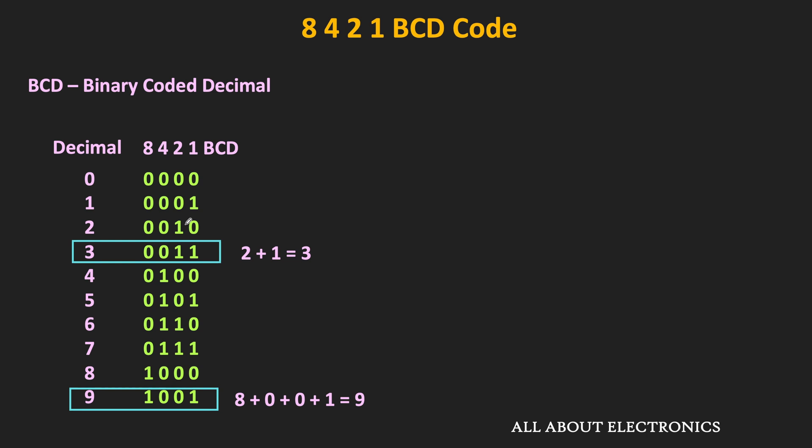So now let's see how to convert any decimal number into the equivalent BCD code. Let's say we want to convert this decimal number 23 into the equivalent BCD code. For the decimal to BCD conversion, we will represent each decimal digit with the corresponding BCD code. So here, the BCD code of the decimal number 2 is equal to 0010, and the BCD code of the decimal digit 3 is equal to 0011. That means this is the overall BCD code of the number 23.